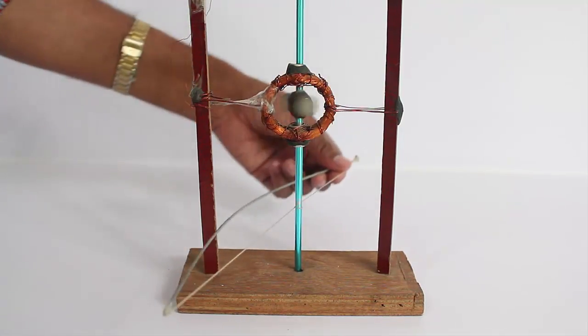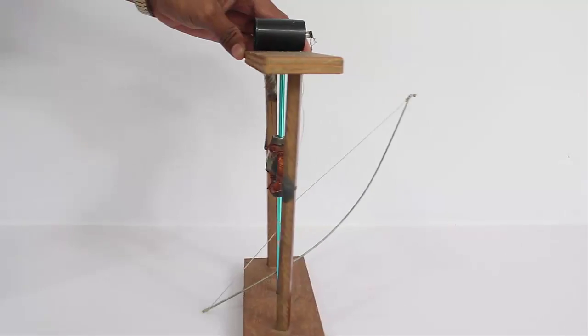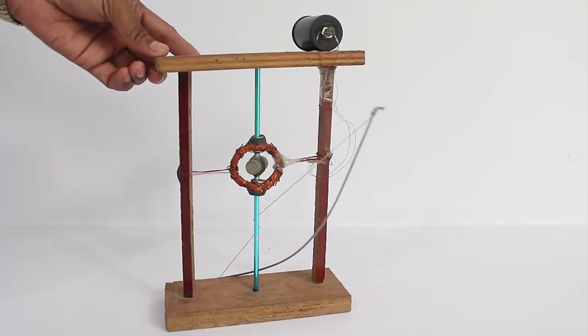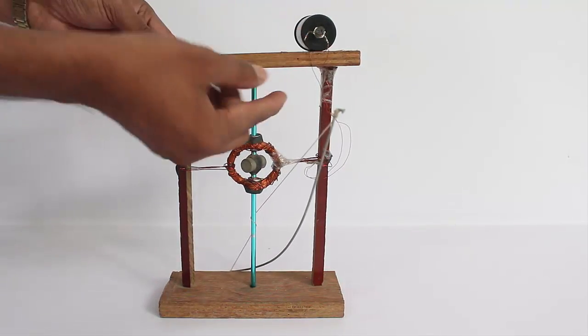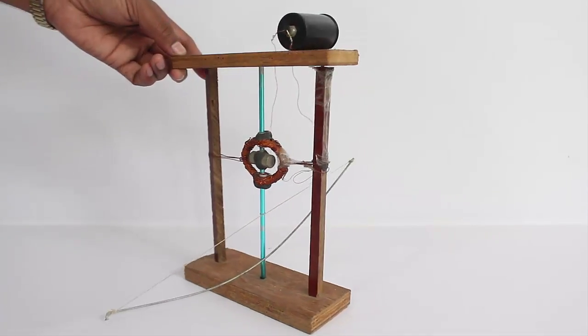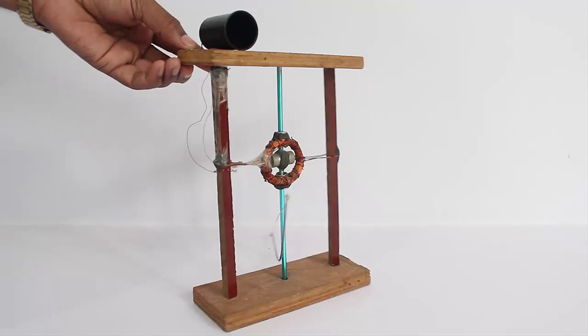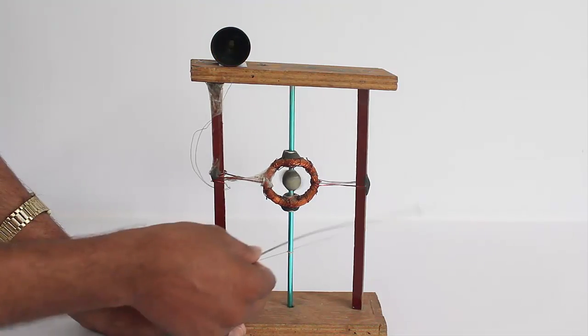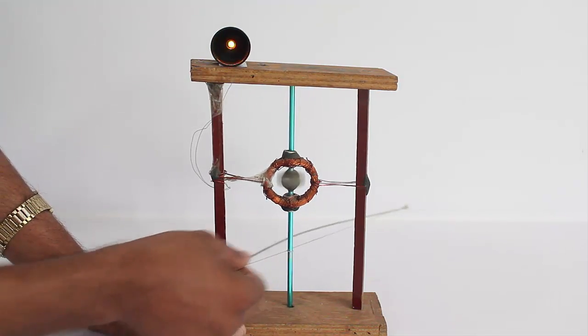Now mount the magnet coil assembly on the upright wooden frame as shown. Then put the bow on the knitting needle. Now thread the bow on the knitting needle.